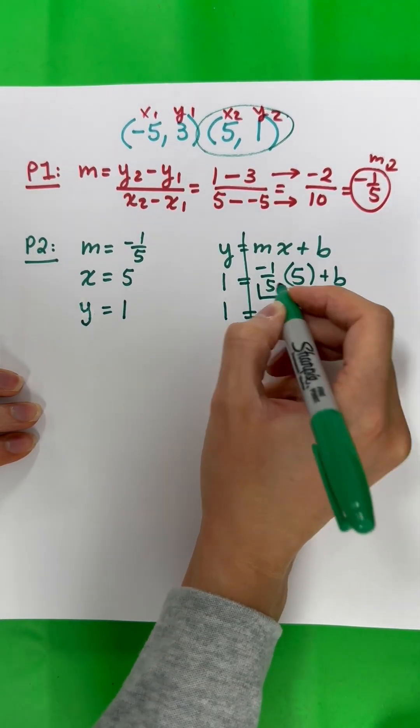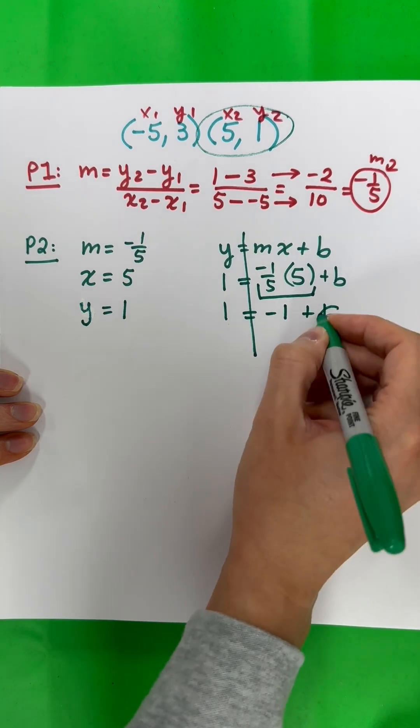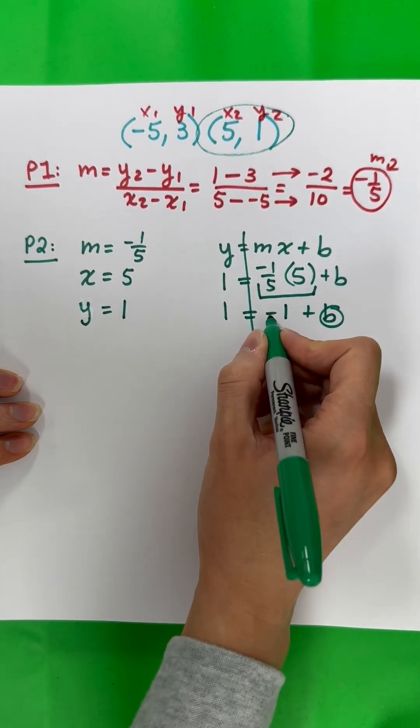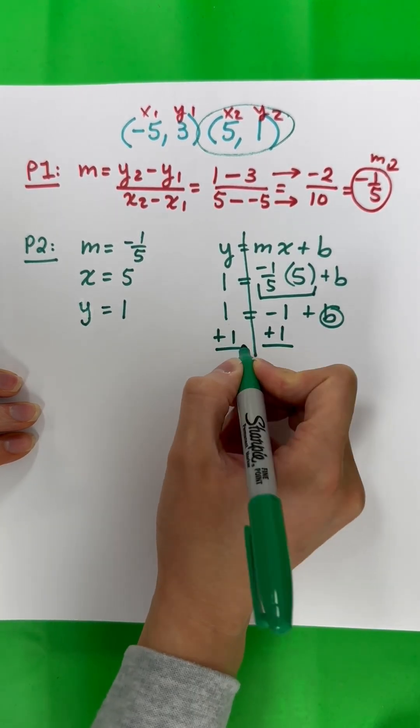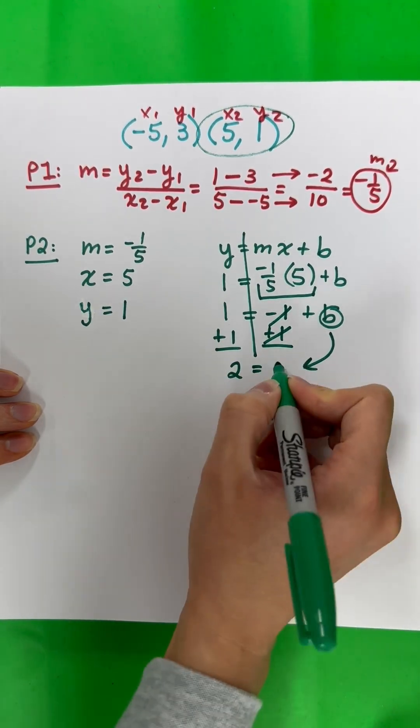1 equals - put this in the calculator - negative 1 fifth times 5 is negative 1, plus B. I want B alone, so I'm going to move this negative 1. The opposite of negative is positive, plus 1. 1 plus 1 is 2, equals negative 1 plus 1 is 0, cancels.